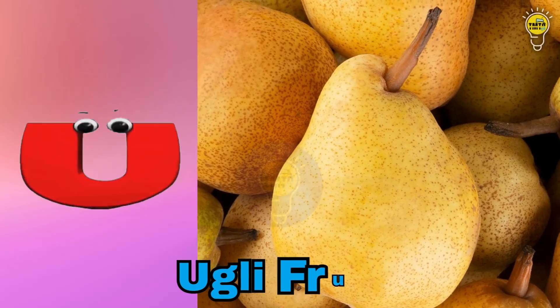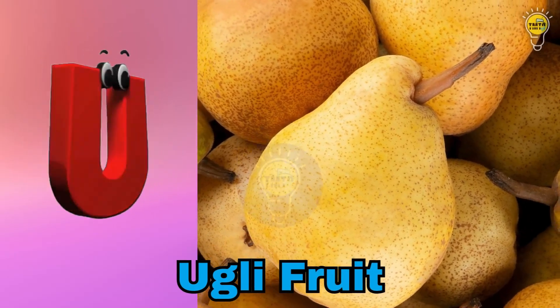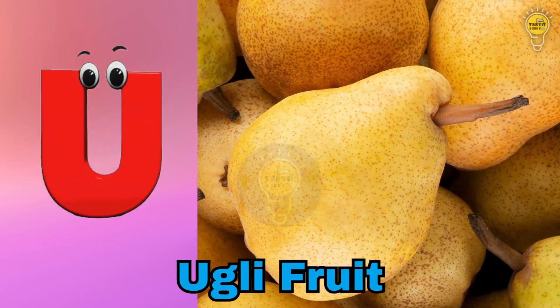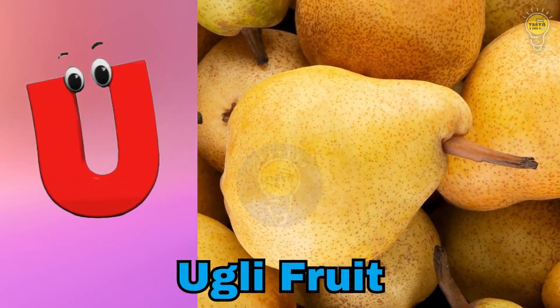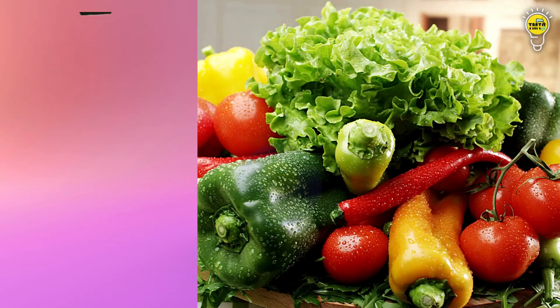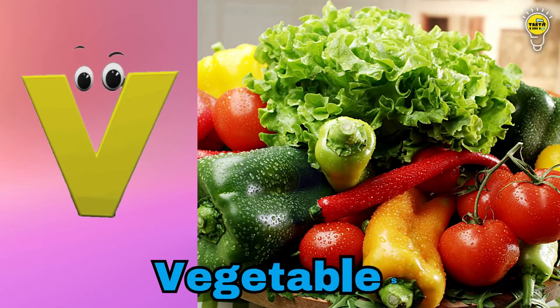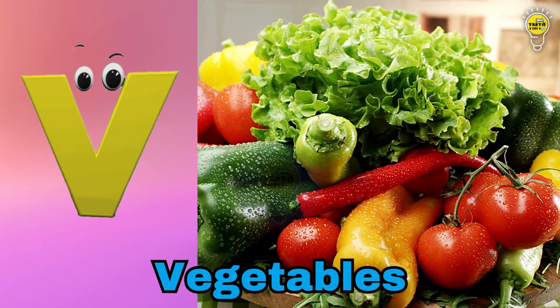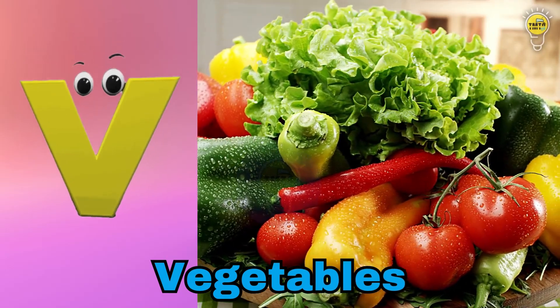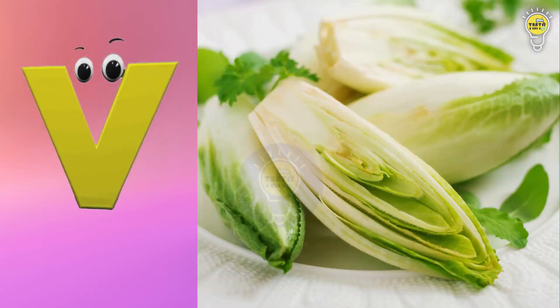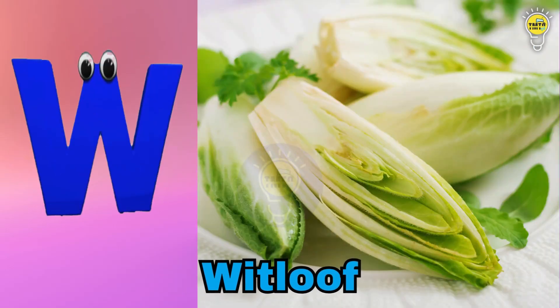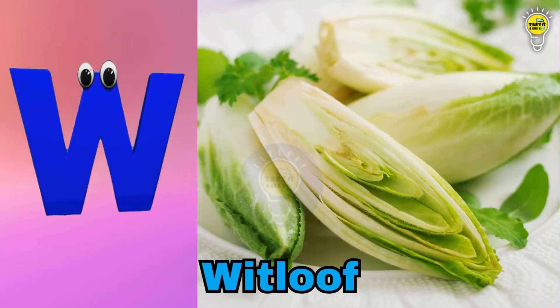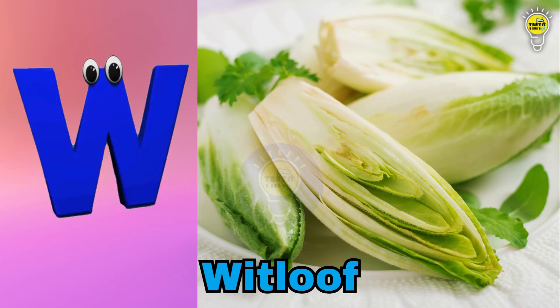U is for ugly fruit, u-u ugly fruit. V is for vegetables, v-v vegetables. W is for witloaf, w-w witloaf.